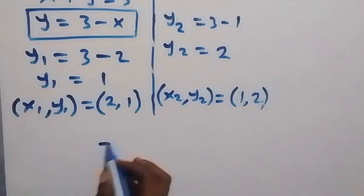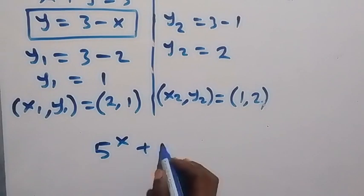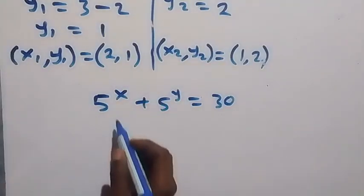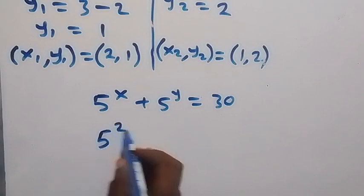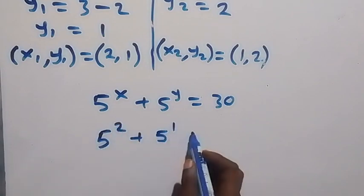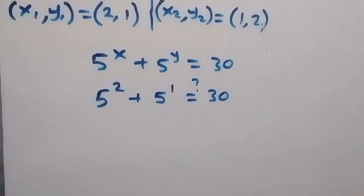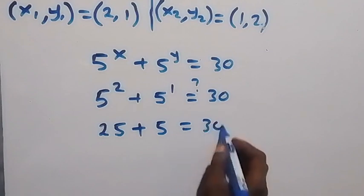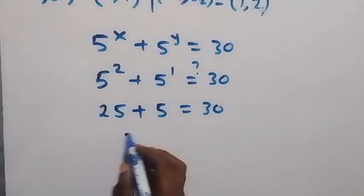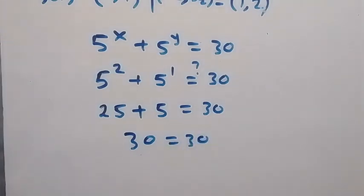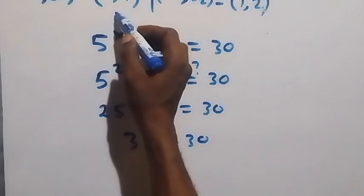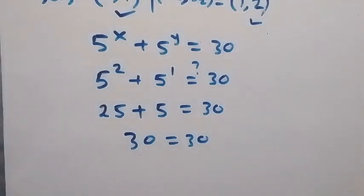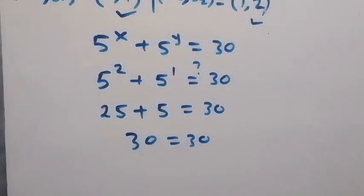Let's verify the first solution using equation 1: 5 raised to power x plus 5 raised to power y equals 30. With x equals 2 and y equals 1, we get 5 squared plus 5 to the power 1, which is 25 plus 5, which equals 30. Left-hand side equals right-hand side, so this solution satisfies the equation. The second solution will also satisfy the equation.